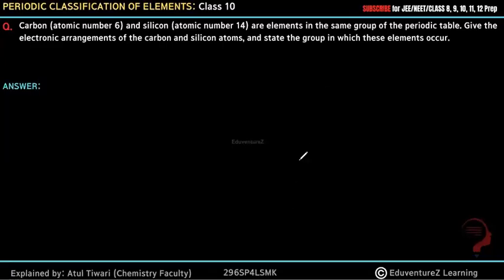Hello everyone. Carbon and Silicon are elements of the same group of the periodic table. Give the electronic arrangement of Carbon and Silicon, and state the group in which these elements occur.